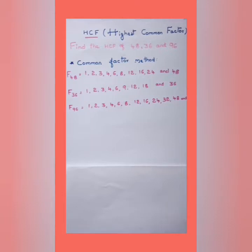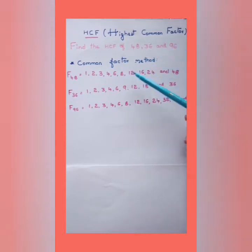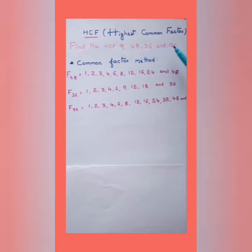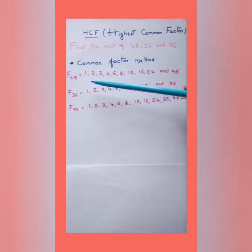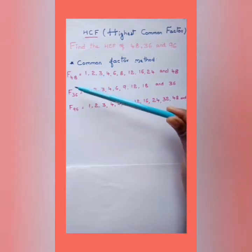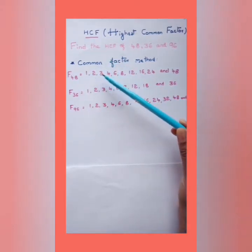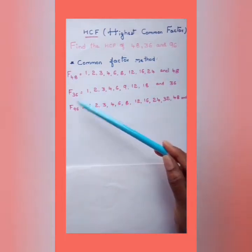Now we will move to the first method — the common factor method — to find the HCF. Let us consider three numbers: 48, 36, and 96. To use the common factor method, you have to write all the factors of all the given numbers. The factors of 48 are: 1, 2, 3, 4, 6, 8, 12, 16, 24, and 48.